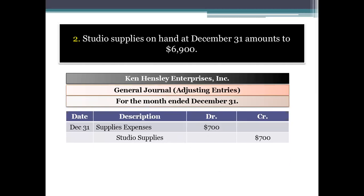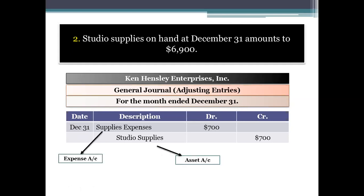$700 is the amount of studio supplies consumed in December. The journal entry is: Supplies Expense debit $700 and Studio Supplies credit $700. Supplies expense belongs to an expense account; studio supplies belongs to an asset account. We debit the supplies expense because in December, supplies were consumed by $700, so your expense increased by $700.